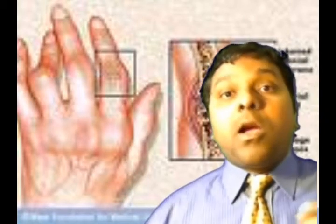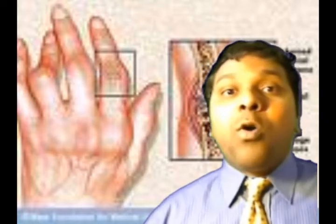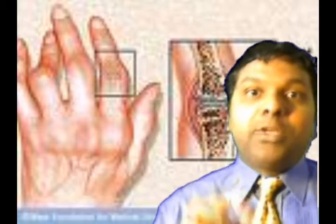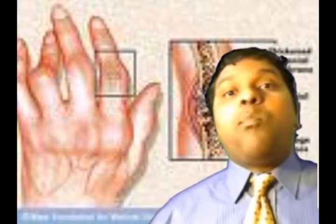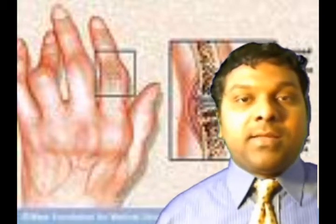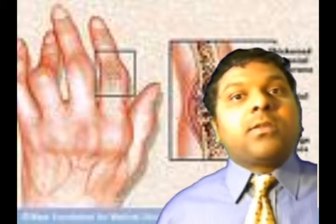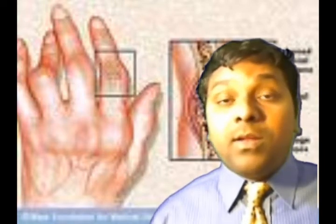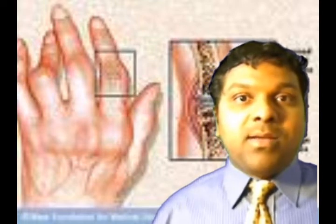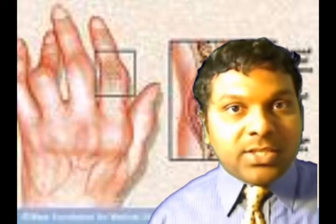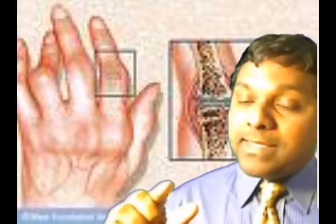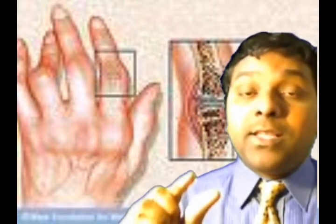Then gout. Gout starts as a monoarticular intermittent disease — typically one joint like the big toe — and it can become polyarticular with time. Patients will also have gouty tophi, which resemble rheumatoid nodules, but always ask about the history of intermittent monoarthritis. On synovial fluid examination, you will see urate crystals.